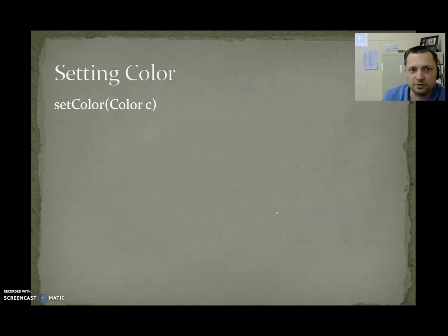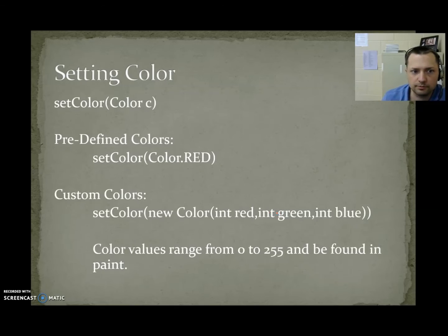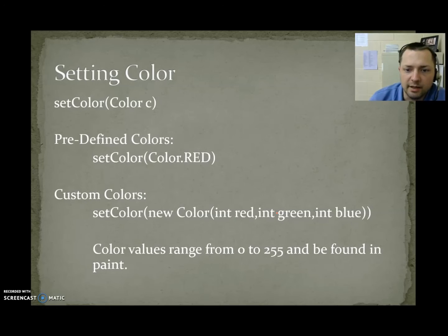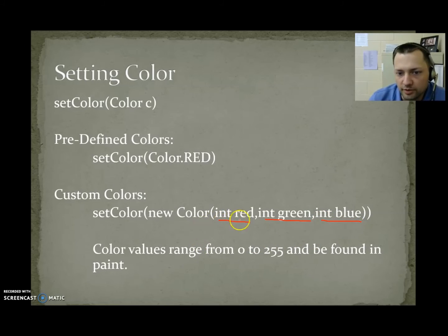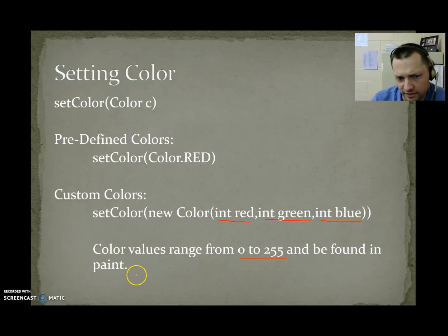setColor(Color c): it has predefined colors like Color.RED, Color.BLACK, Color.GREEN — look up the Color class to find all preset colors. For a custom color, pass new Color(red, green, blue), creating a new Color object. When dealing with light, all colors are represented with red, green, and blue values, each ranging from 0 to 255 — 0 means none of that color, 255 means maximum. You can use Paint to find these color values.